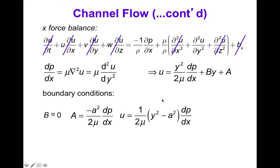And so therefore the final solution is u equals 1 over 2 mu times y squared minus a squared dp dx, which is a parabola, a parabolic flow profile that's maximum in the middle when y equals zero, and zero on the boundaries when y equals plus or minus a.